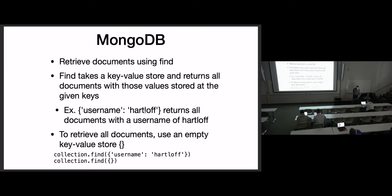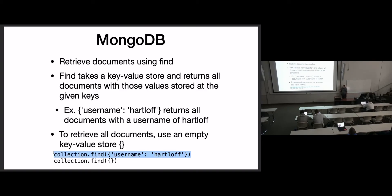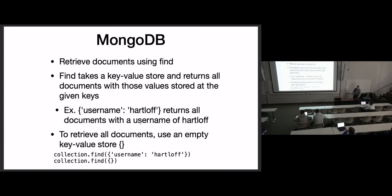To retrieve documents from a collection, you use 'find' and give it an object where you filter based on values at certain keys. For example, find all records with a key called 'username' with a value of 'hartloss.' If you want all records — the equivalent of SELECT * — just give it an empty object and you'll get every record in that collection. The syntax is a bit different, but you can do the same things you do with SQL. I'll defer to the W3Schools MongoDB tutorial for more specific functionality.